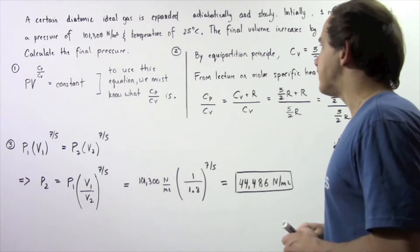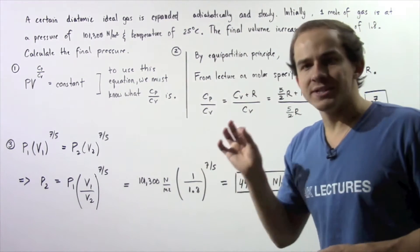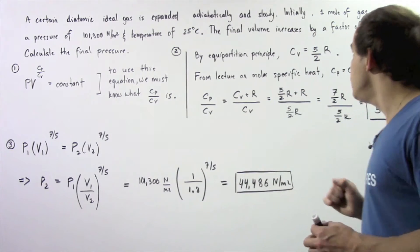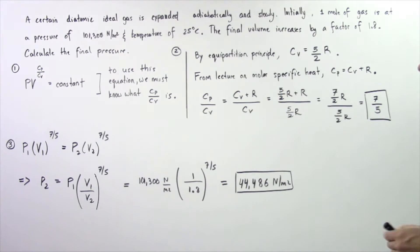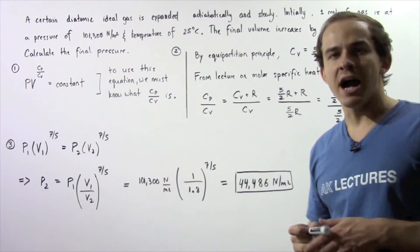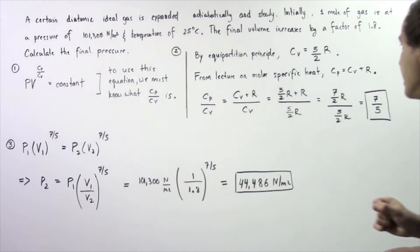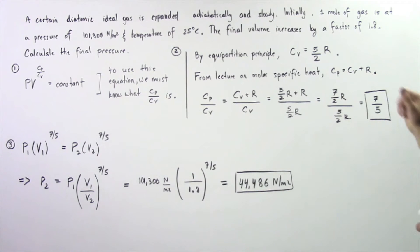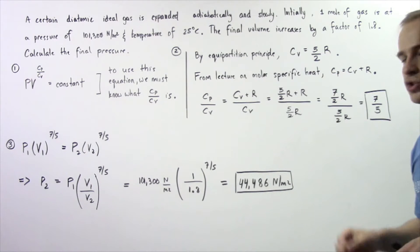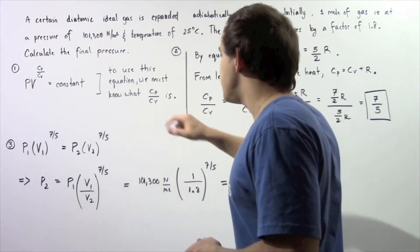In step two, that's exactly what we will do. By the equipartition principle of energy, we know that Cv, the molar specific heat when the volume is constant, is equal to five divided by two multiplied by R, the universal gas constant. From the lecture on molar specific heat, we saw that the relationship between Cp, Cv, and R was given by the following equation: Cp is equal to the sum of R and Cv. So now let's determine what this ratio is.